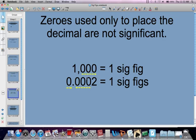Zeros that are only used to place the decimal—these three zeros are just telling me that the decimal goes right there. These four zeros are simply telling me that the decimal goes right here. Yes, these are zeros after the decimal, but they're not at the end after a decimal, so therefore they're not significant. Both of these numbers have one sig fig.